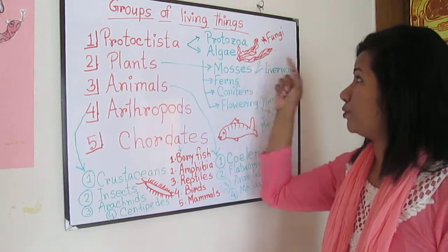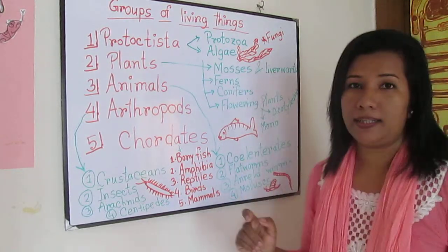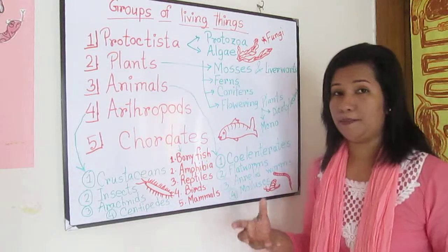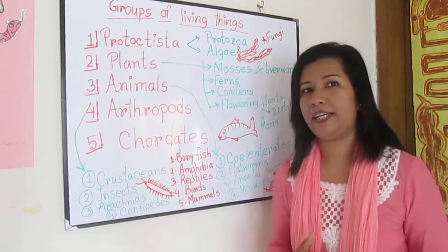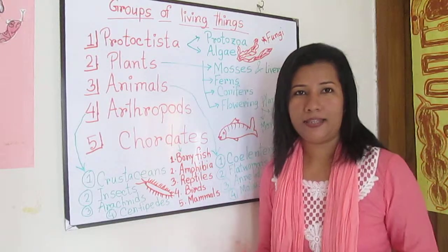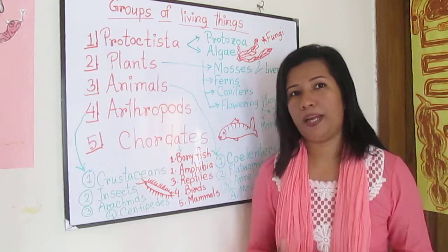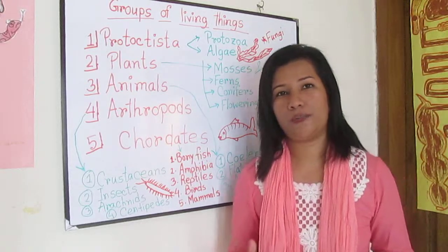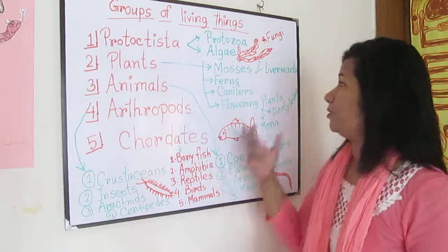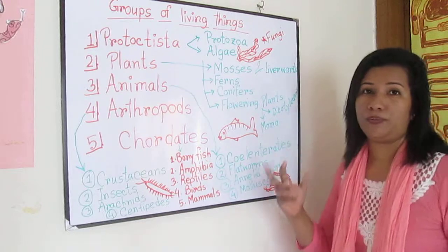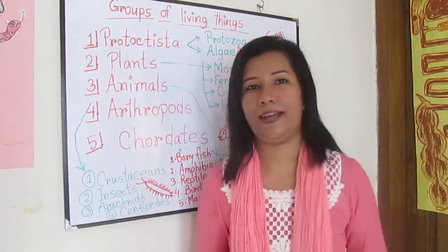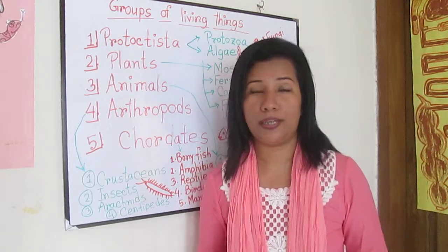Protoctista includes protozoa and algae. Protozoa are microscopic creatures made of one cell, and algae are simple plant-like organisms such as seaweed. Fungi includes mushrooms, molds, and mosses.